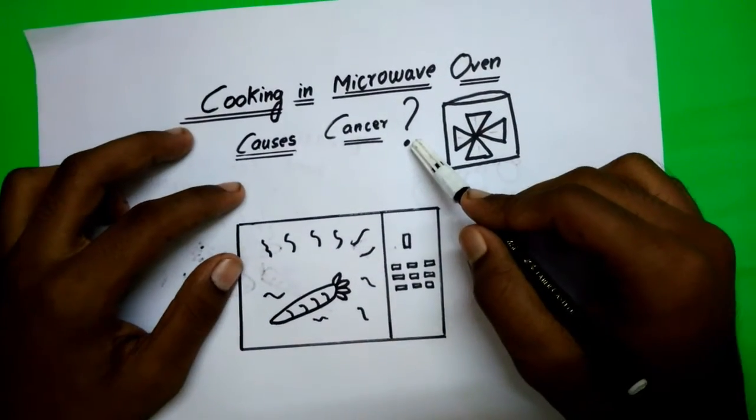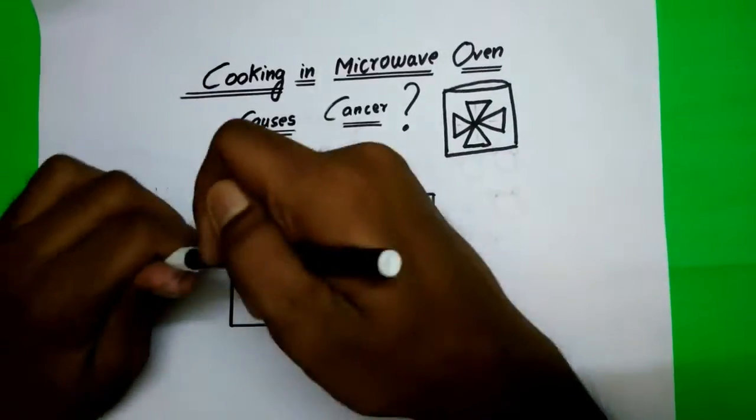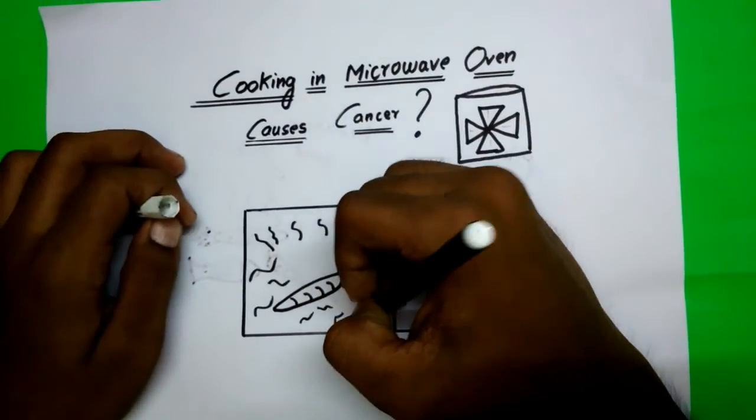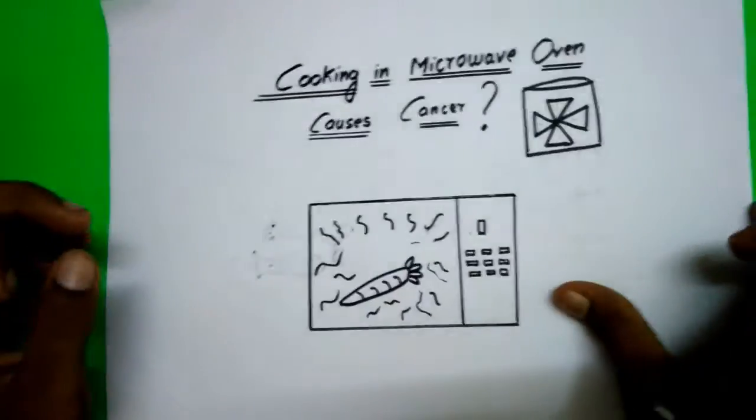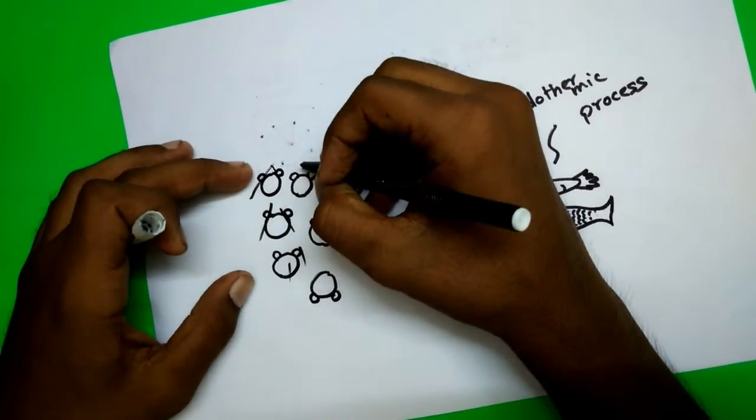What actually happens in a microwave oven is when we switch it on, it produces a magnetic field which in turn produces microwaves. Microwaves like this break the bonds of the water molecules present in the food particles.